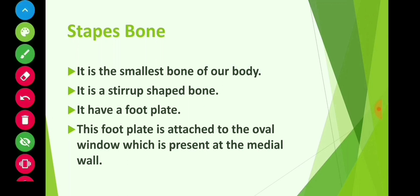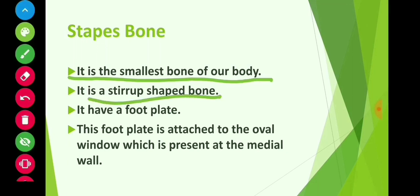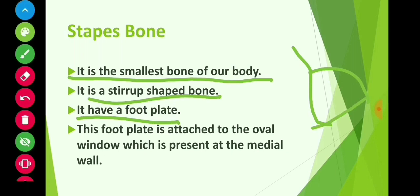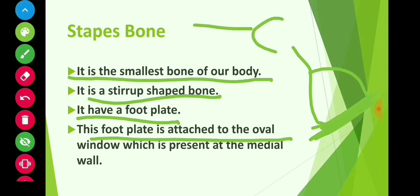Now we will discuss about the stapes — the smallest bone of our body. This is as small a bone as exists in our body. It has a foot plate. The stapes looks like this, and this is the foot plate, which is attached to the oval window present at the medial wall.